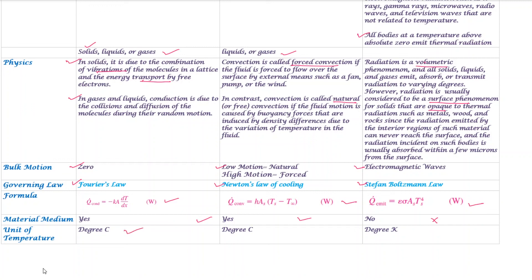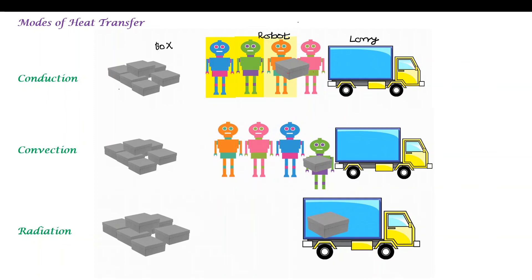In conduction and convection, we calculate using degree Celsius. For radiation, we calculate using degree Kelvin. If a body is at zero Kelvin, it will emit no thermal radiation. This is very important — the unit of thermal radiation must be in Kelvin.